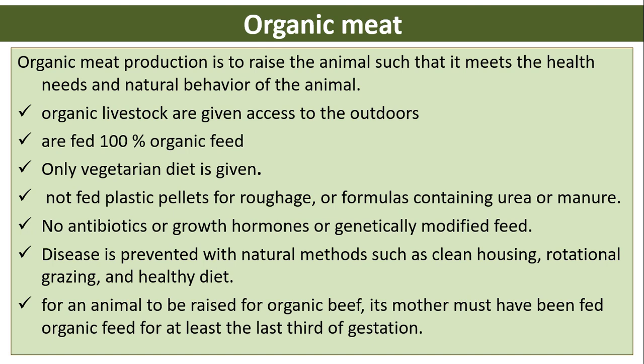Organic meat production aims to raise animals to meet their health needs and natural behaviors. Organic livestock are given access to the outdoors, fed 100 percent organic feed with vegetarian diet only, and are not fed plastic pellets, urea-containing formulas, or manure. No antibiotics, growth hormones, or genetically modified feeds are used.